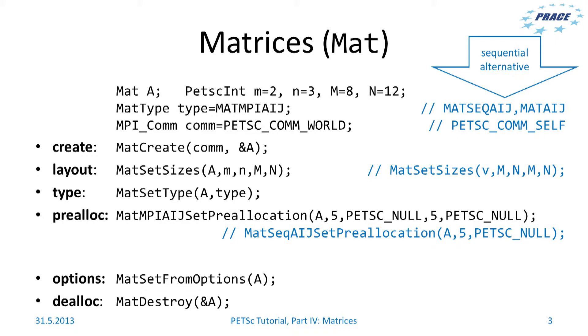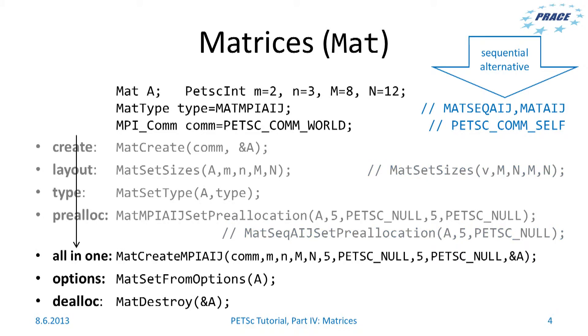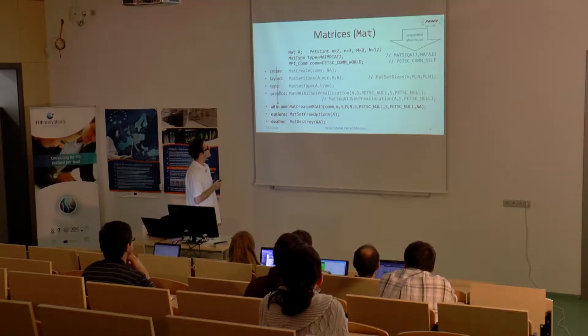Again in case of sequential alternative, you use PETSC_COMM_SELF as a communicator and you set the local and global sizes to the same numbers. And again you can call all-in-one using this comfortable function MatCreateMPIAIJ where you create, set the layout, set the type, and pre-allocate in one call.